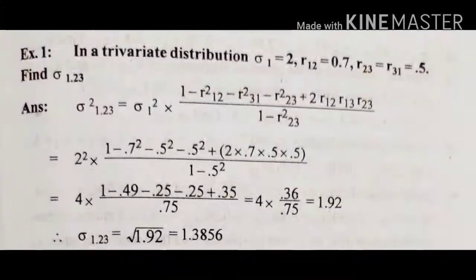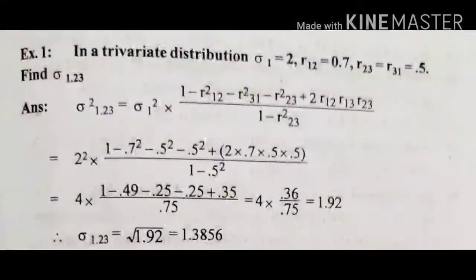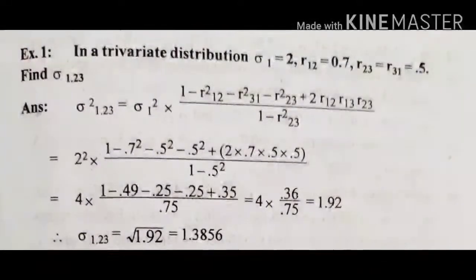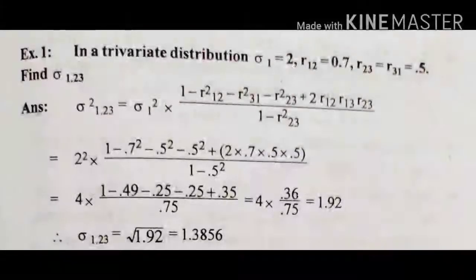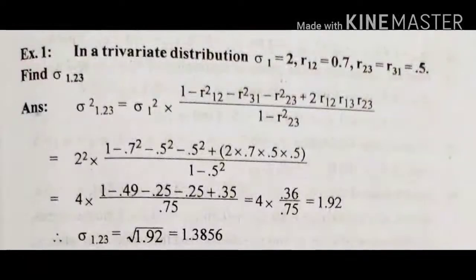Using the formula, σ₁.₂₃² is given by: σ₁² into (1 minus r₁₂² minus r₂₃² minus r₃₁² plus 2·r₁₂·r₁₃·r₂₃) divided by (1 minus r₂₃²). Substituting: 2² into (1 minus 0.7² minus 0.5² minus 0.5² plus 2 into 0.7 into 0.5 into 0.5) divided by (1 minus 0.5²).